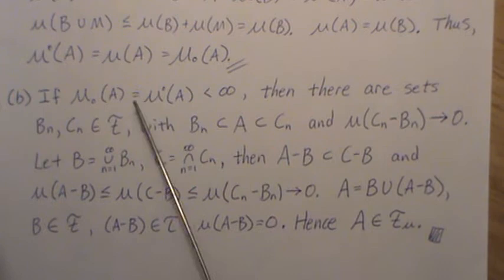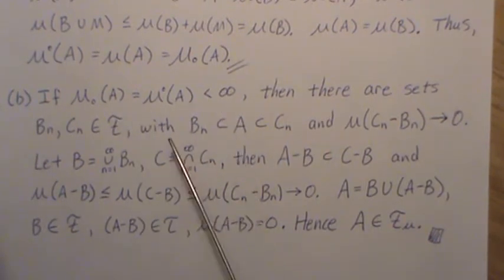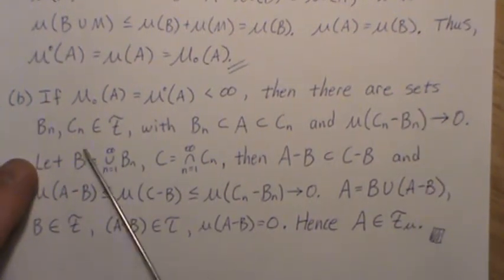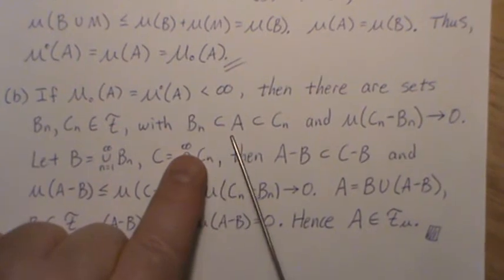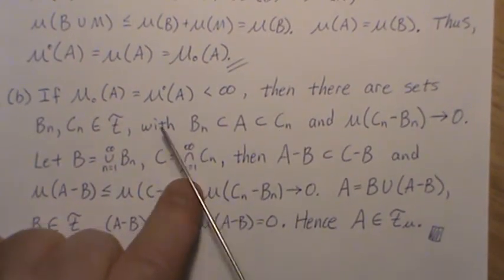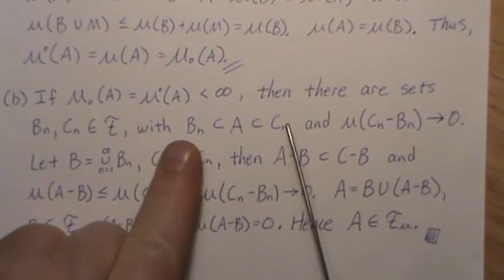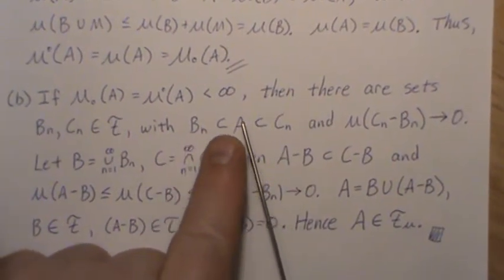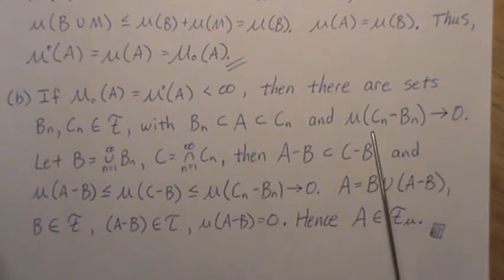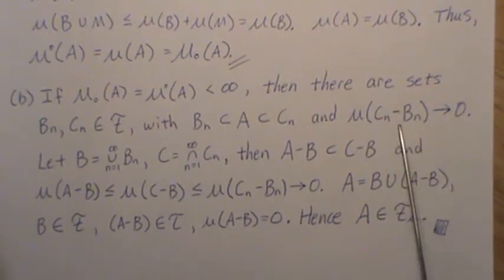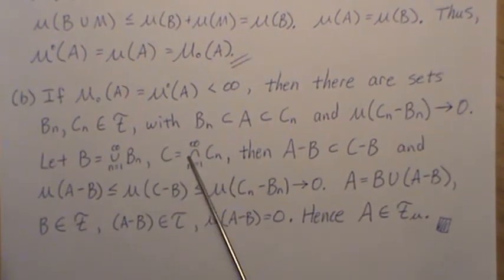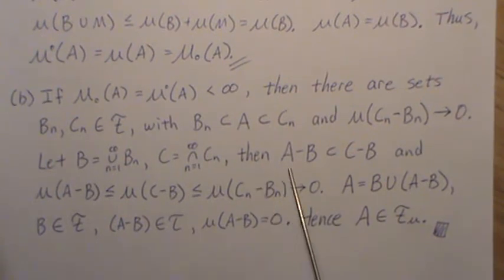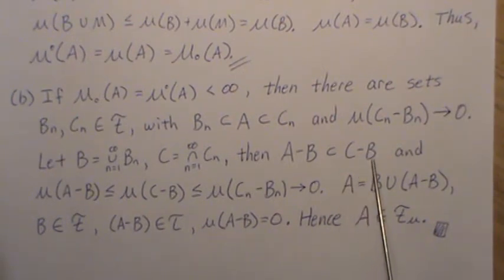Now, let's assume that these two measures are equal and finite. That means there are sets B_n and C_n in the sigma field with this relationship. B_n is a subset of A, which is a subset of C_n. But now these are equal. So these sets, they have to go down to A. So that means the measure of their difference goes to zero as N goes to infinity. Now, let's let B be that infinite union of B_n and C be the infinite union of C_n. Then we know A minus B is a subset of C minus B.